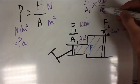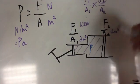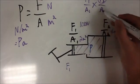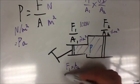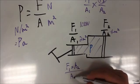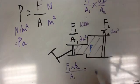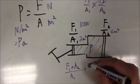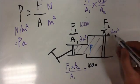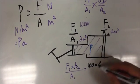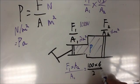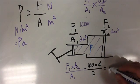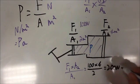So, if we're looking for F2, we'll do some cross multiplication. This is going to mean that F1 times A2 over A1 is equal to F2. So what that means is if we do 100 times area 2, which is 4 metres, over area 1, that's going to give us 400 divided by 2, that's going to give us 200 newtons.